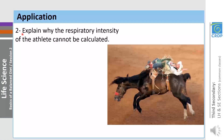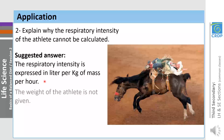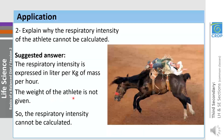Question two: explain why the respiratory intensity of the athlete cannot be calculated. The respiratory intensity is the volume of oxygen consumed in liters per 1 kilogram of body mass per hour. Referring to the given data, the volume of oxygen consumed is calculated and the time is 10 minutes, but the weight of the athlete is not given. For this reason, the respiratory intensity cannot be calculated.